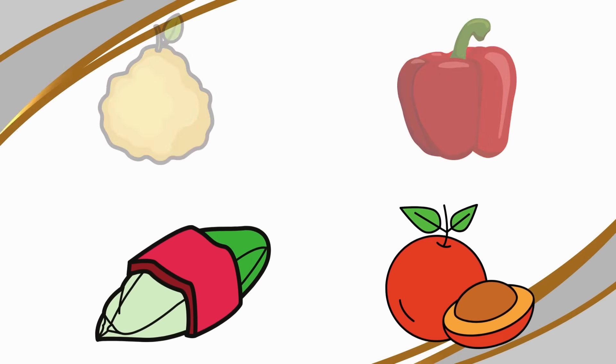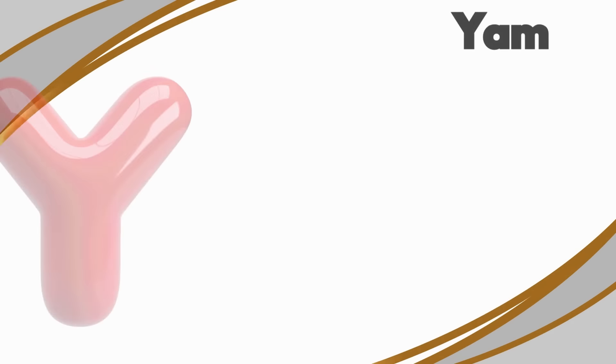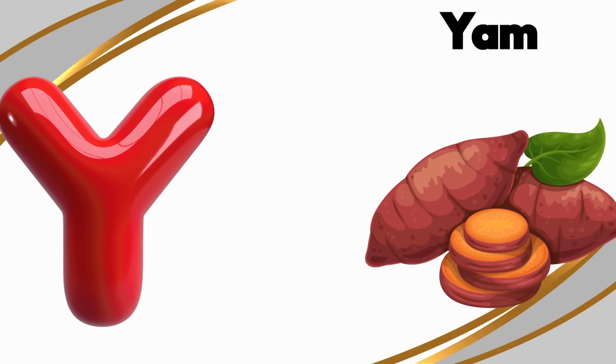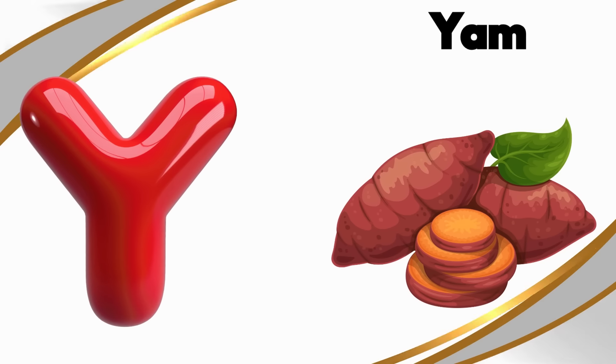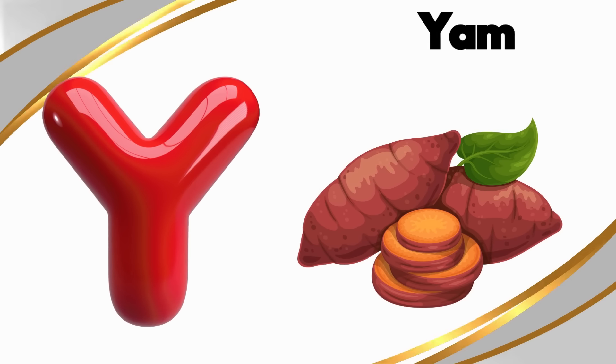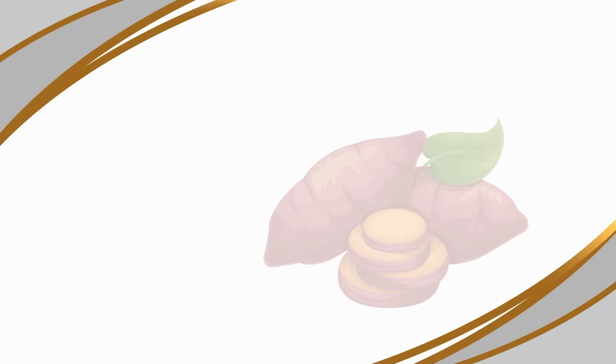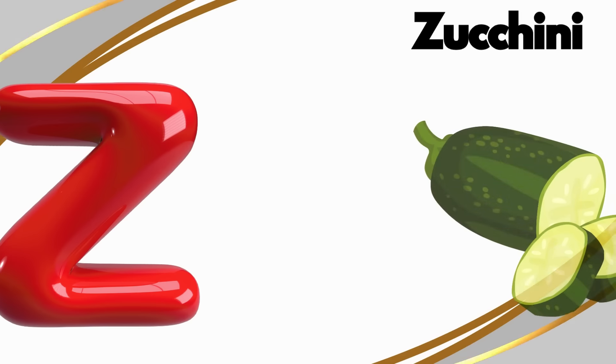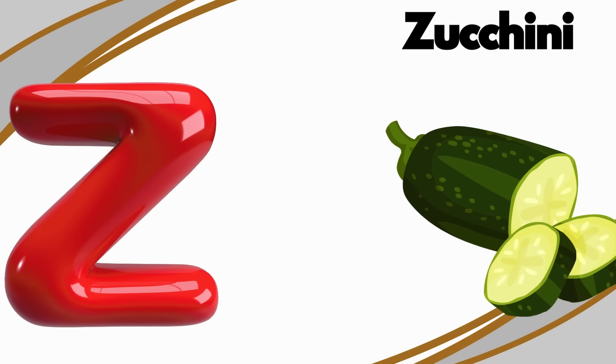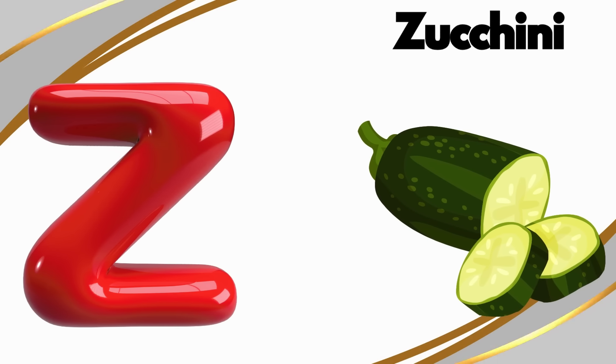Y is for yam, y-y-y-yam. Z is for zucchini, z-z-z-zucchini.